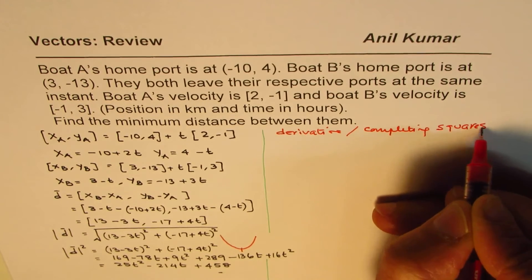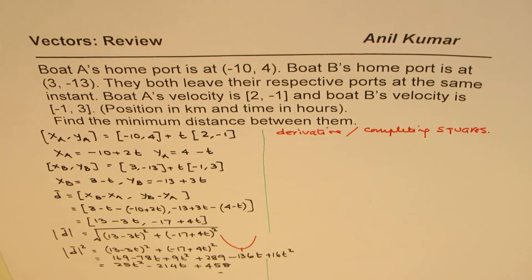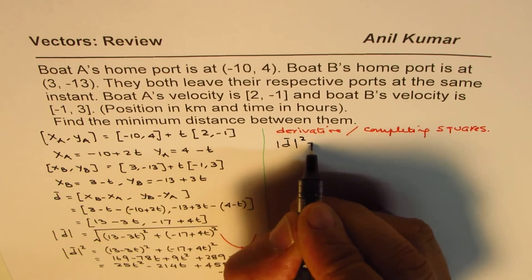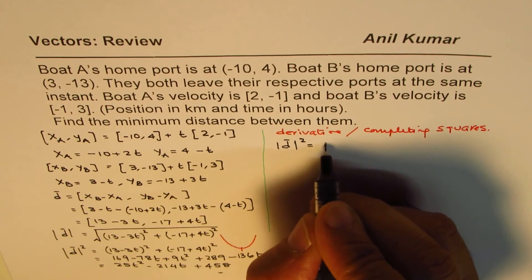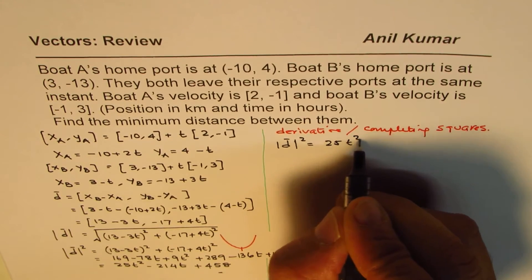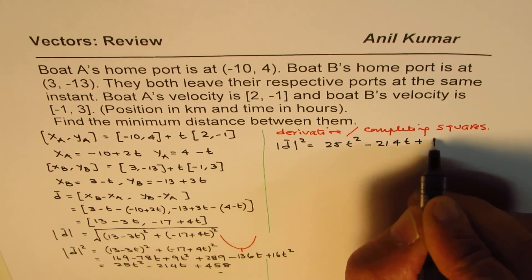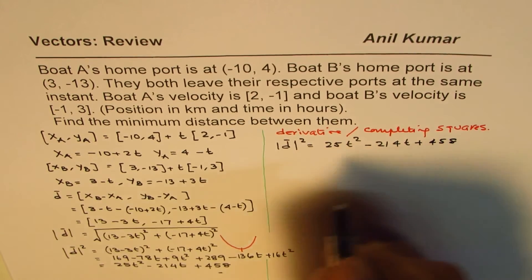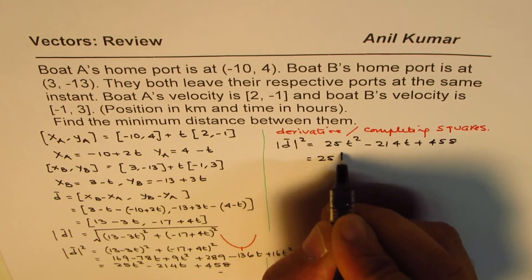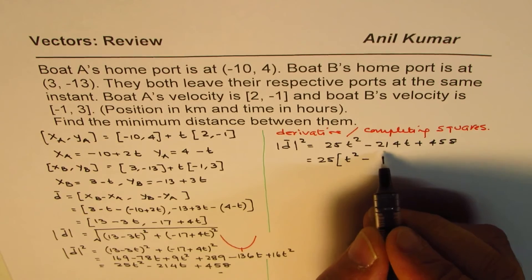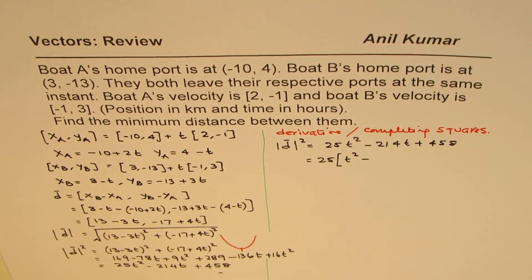Most students have not done calculus so far, so I'll rewrite this equation and minimize distance square. We have 25t² - 214t + 458. Completing squares means we'll take 25 common. So we are left with t² minus 214 divided by 25.